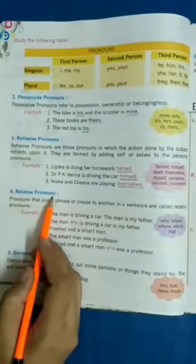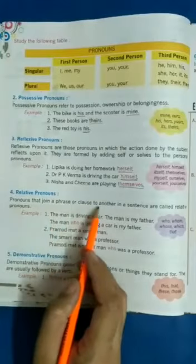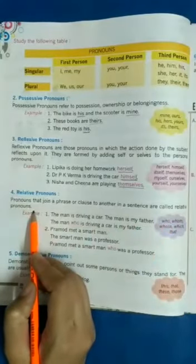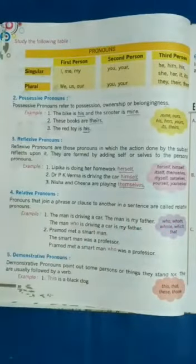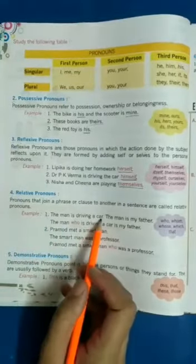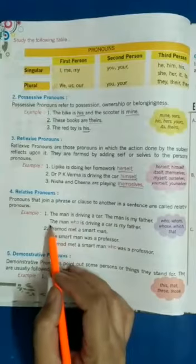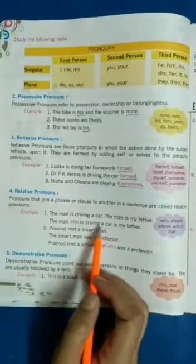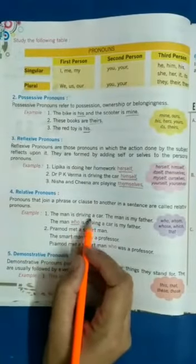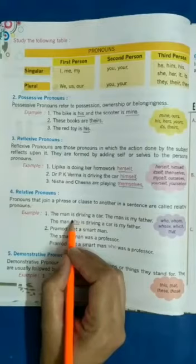Fourth — relative pronouns. Pronouns that join a phrase or a clause to another in a sentence are called relative pronouns. Relative pronouns वह pronouns होते हैं जो किसी clause या phrase को एक sentence में जोड़ते हैं। Example: 'The man is driving a car. The man is my father.' — इन दोनों को जोड़ना है। कैसे? 'The man who is driving a car is my father.' So, 'who' ने join किया — यह relative pronoun हुआ।